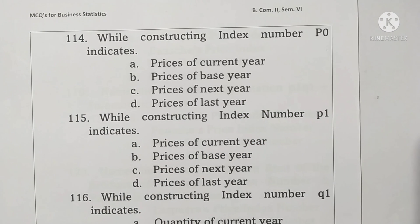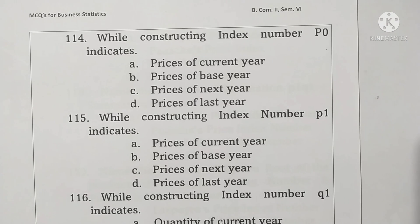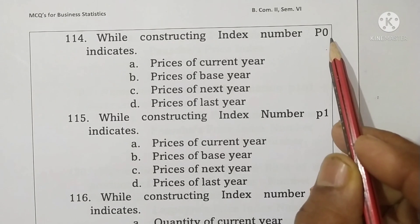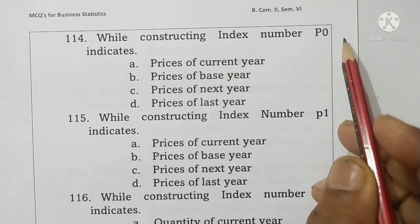We are going to discuss the multiple choice questions on business statistics, it's the fourth part which is the last one. Question 114: while constructing an index number, p0 indicates price 0, i.e., the price of the base year. Option B is correct.